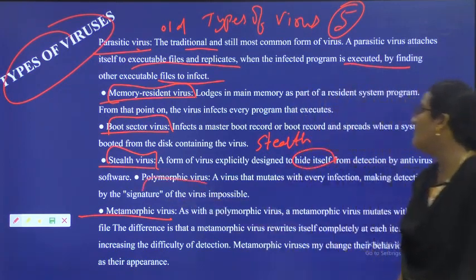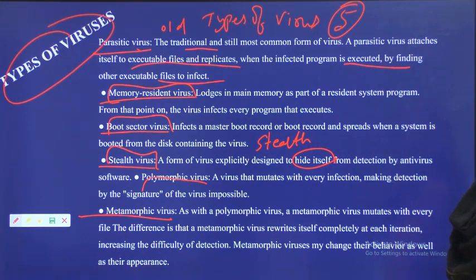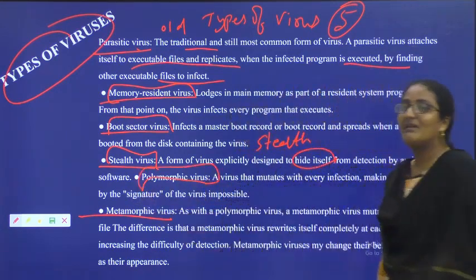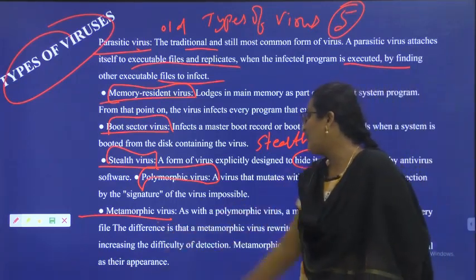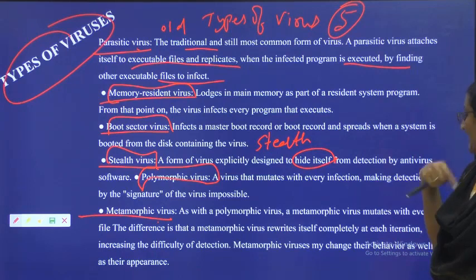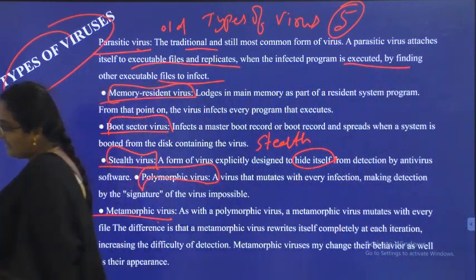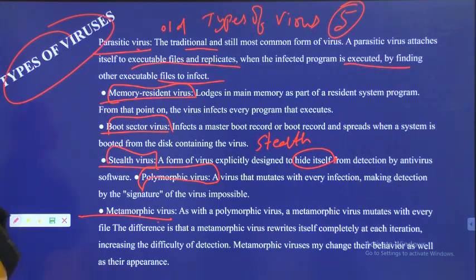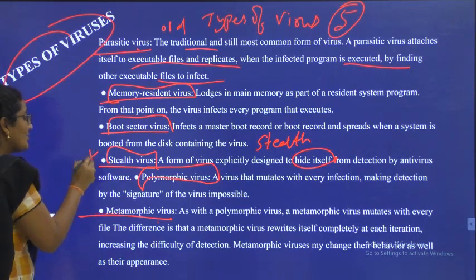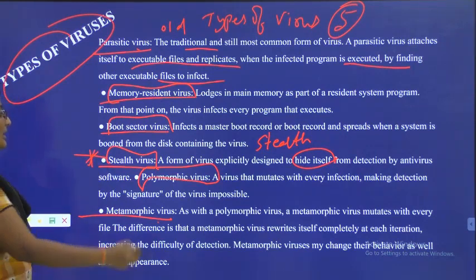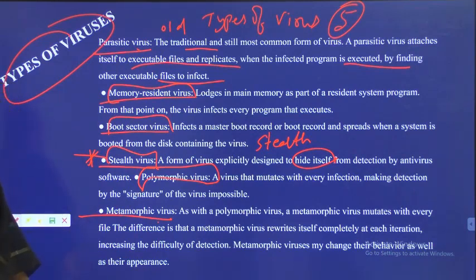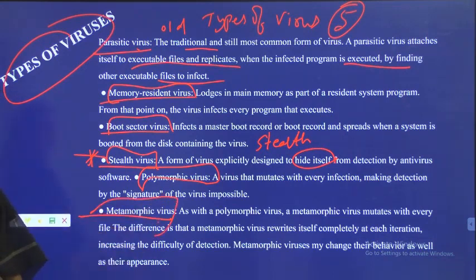Stealth virus is very dangerous because we cannot identify it with antivirus. Polymorphic virus — poly means many — will cause all kinds of damages to your system: deleting files, modifying files, changing dates and signatures. Metamorphic virus will rewrite and make changes to your files.